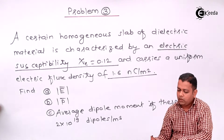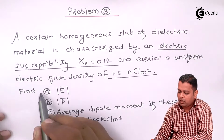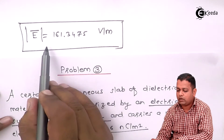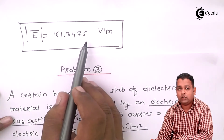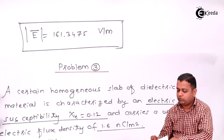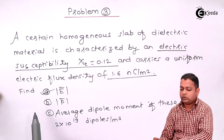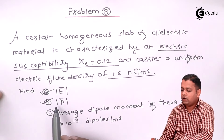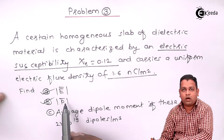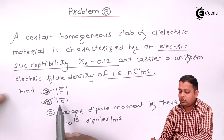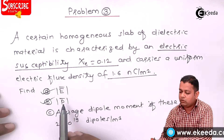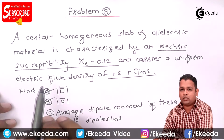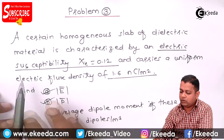We were asked to find |E̅|, and we have found |E̅| = 161.3475 volts per meter. Now let us concentrate on part B. In part B, we are asked to find |P̅|, the magnitude of the polarization in the uniform homogeneous dielectric material with the given details.